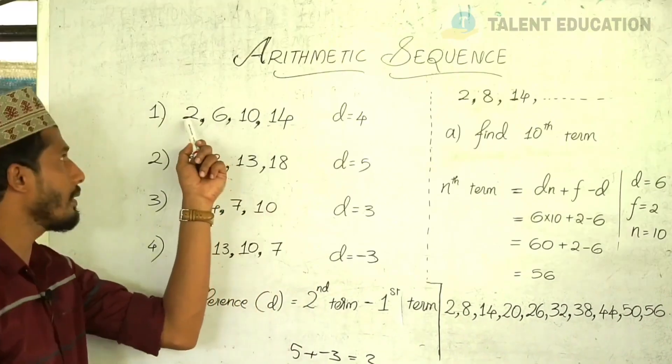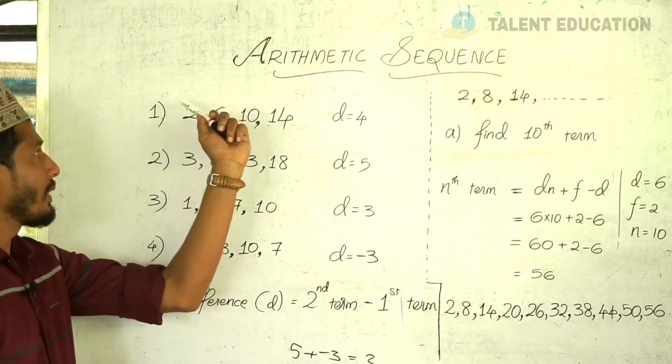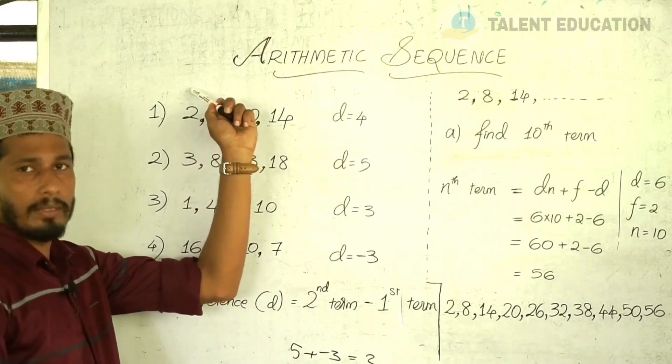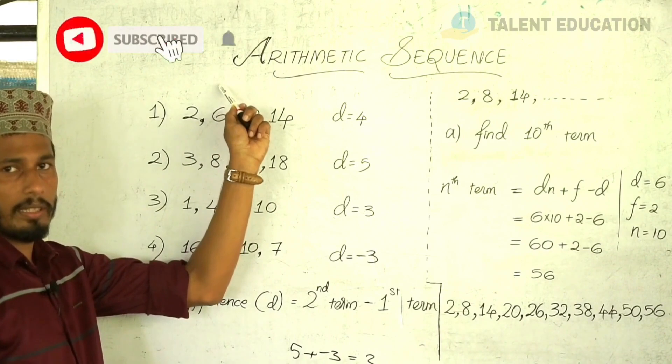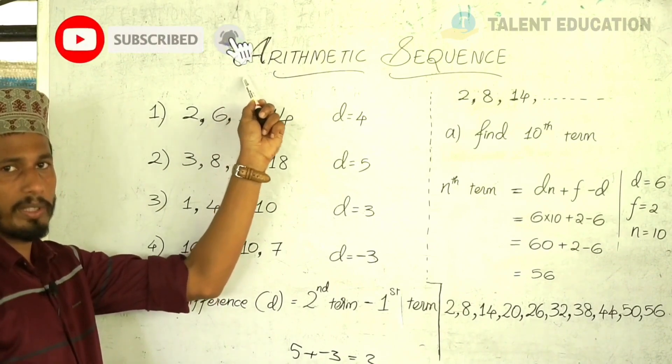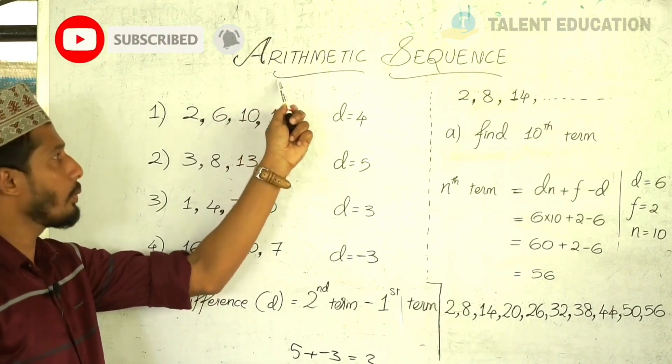For example, we have 1 example. We have 4 times, 6 times, 4 times, and 4 times.